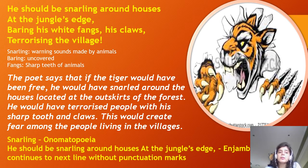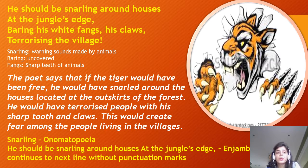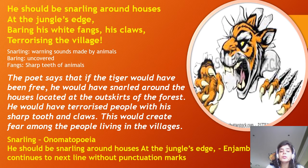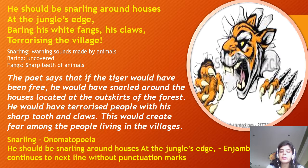Now coming to the poetic devices in the third stanza: 'snarling' is a sound made by an animal. Whenever a sound word is used in a poem — like a bee's buzz or a snake's hiss — the poetic device used is onomatopoeia. Also, 'he should be snarling around houses at the jungle's edge' — the first line continues into the second with no punctuation, so the poetic device used is enjambment.